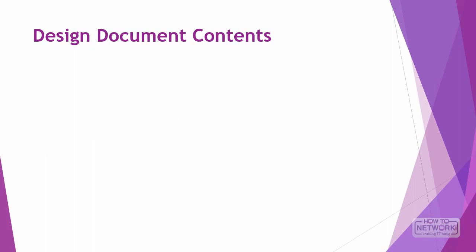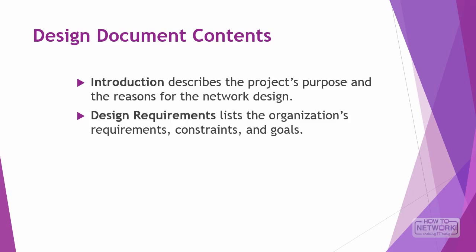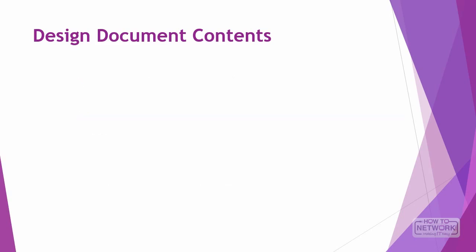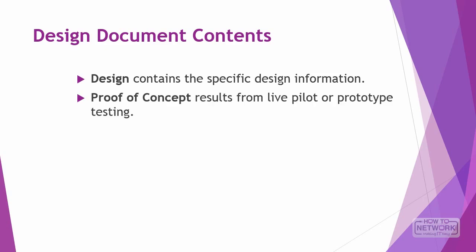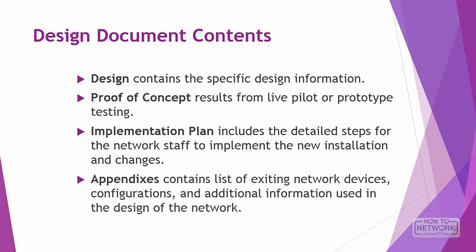The design document should include the following sections: introduction, design requirements, existing network infrastructure including Layer 3 topology diagrams, physical topology diagrams, audit results, network health analysis, routing protocols, applications, and a list of routers, switches, and other devices. The design portion contains specific design information such as logical and physical topology, IP addressing, and routing protocols. Also included are proof of concept from live pilot or prototype testing, the implementation plan with detailed steps for network staff, and appendixes listing all existing network devices, configurations, and additional information.